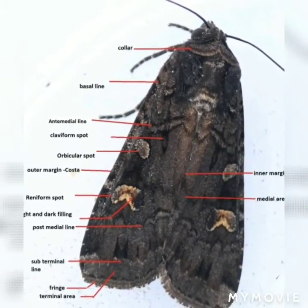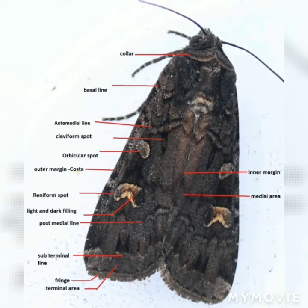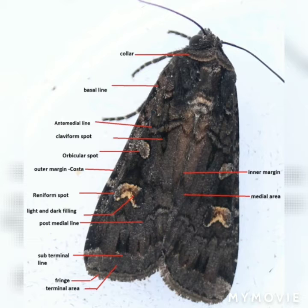Abdomen is composed of ten segments. Moths are nocturnal or night flyers; they come to light during rainy seasons. Habit and habitat: Moths are found on the light during the rainy season.